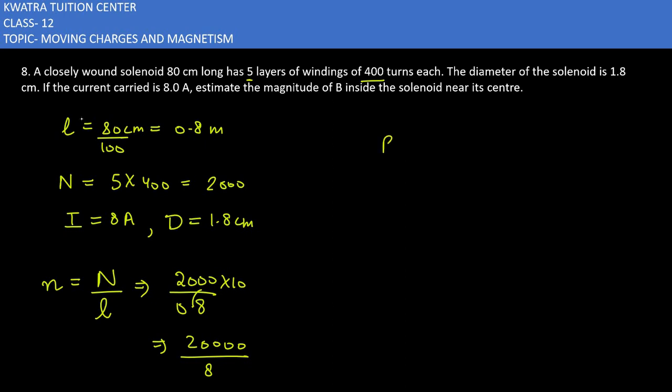Now we have to substitute for the magnetic field. B equals mu naught times n times I. Mu naught is 4 pi times 10 to the power minus 7. N is 20,000 over 8. I is 8. The 8s cancel.